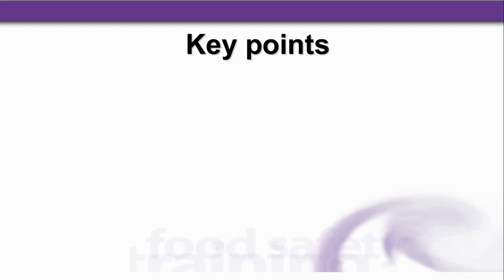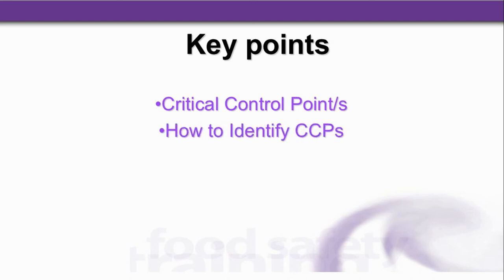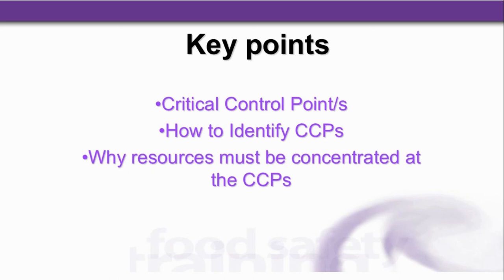The key points of this section on critical control points: we looked at CCPs and how to identify them using the simplified or the more complicated Codex decision tree. We can also learn from team members and scientific knowledge. Resources must be concentrated at the CCPs because all CCPs need to be monitored — usually by staff — which can be quite expensive. This is why we say not to have more than an absolute maximum of CCPs. The concentration at CCPs ensures everything remains within control, because once a CCP goes out of control, contamination could creep in.